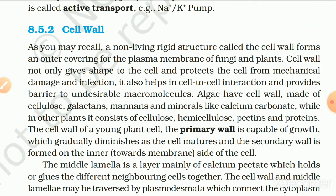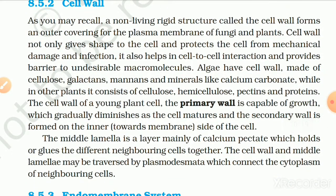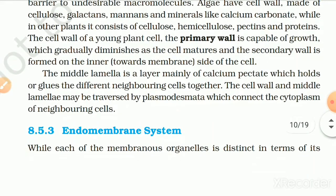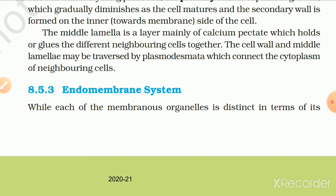8.5.2 Cell Wall. A non-living rigid structure called the cell wall forms the outer covering for the plasma membrane of fungi and plants. The cell wall not only gives shape to the cell and protects it from mechanical damage and infection, but also helps in cell-to-cell interaction and provides a barrier to undesirable macromolecules. Algae have cell walls made of cellulose, galactans, mannans and minerals like calcium carbonate, while in other plants it consists of cellulose, hemicellulose, pectin and proteins. The primary wall of a young plant cell is capable of growth, while the secondary wall is formed on the inner side as the cell matures. The middle lamella, mainly of calcium pectate, holds neighbouring cells together, and may be traversed by plasmodesmata connecting the cytoplasm of neighbouring cells.